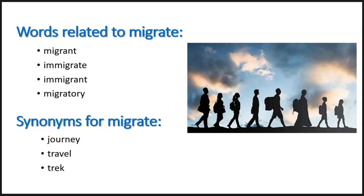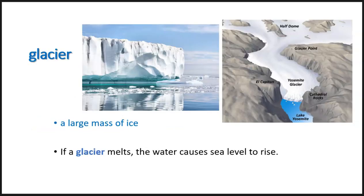Let's go on and learn the word glacier. A glacier is a large mass of ice. If a glacier melts, the water causes sea level to rise. As we talk about the Bering Land Bridge, there's this idea that glaciers had caused the sea level to drop, therefore possibly causing the land bridge.